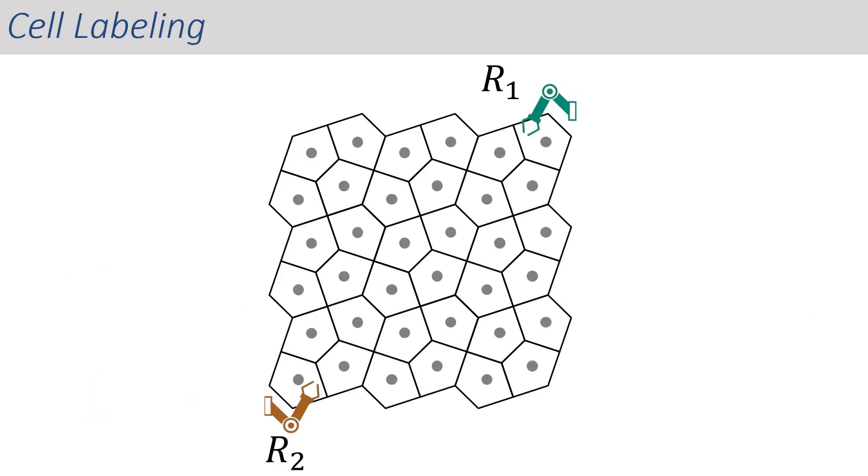In order to distribute cells between the two robots, we label each cell at a given layer based on the robot closest to it. This can be achieved through a simple distance computation between cell centers and robot positions. Notice that this distance-based labeling always results in contiguous partitions assigned to each robot.